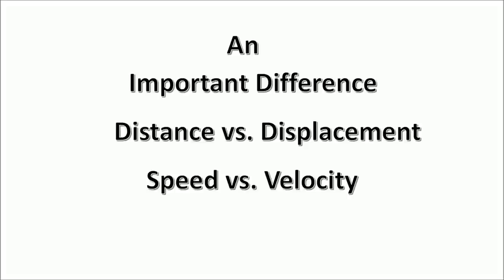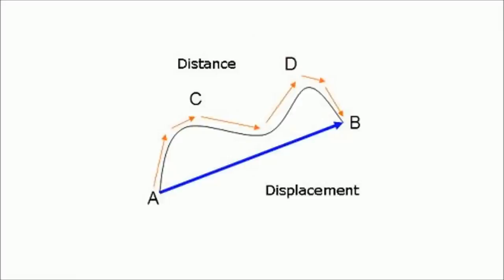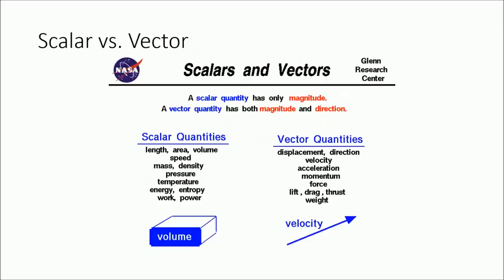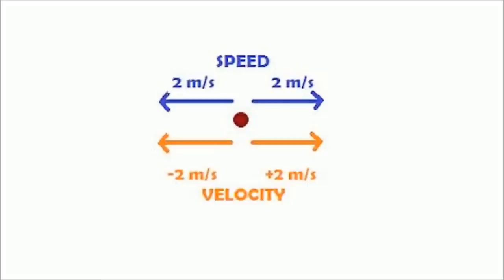When we use kinematics, we will always use displacement and velocity, never distance and speed. Why, you ask? Because displacement and velocity can both be represented by lines, and for everything else you need calculus. So, considering that nobody likes calculus, I suggest you stick to velocity and displacement.